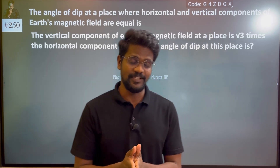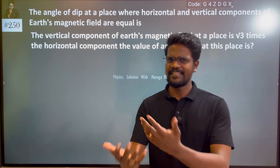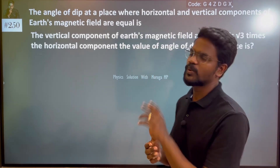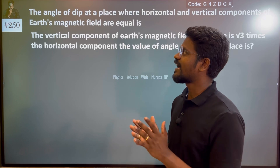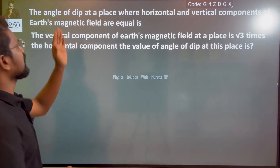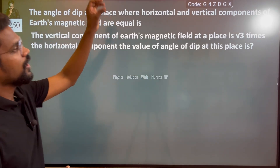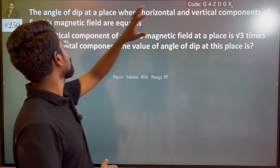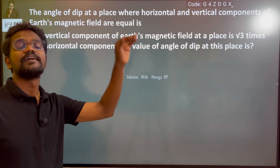Hi Everyone. Today we have some questions — easy ones and not-so-easy ones. First, let's look at this: the Angle of Dip at a place where the Horizontal and Vertical Components of Earth's Magnetic Field are equal.